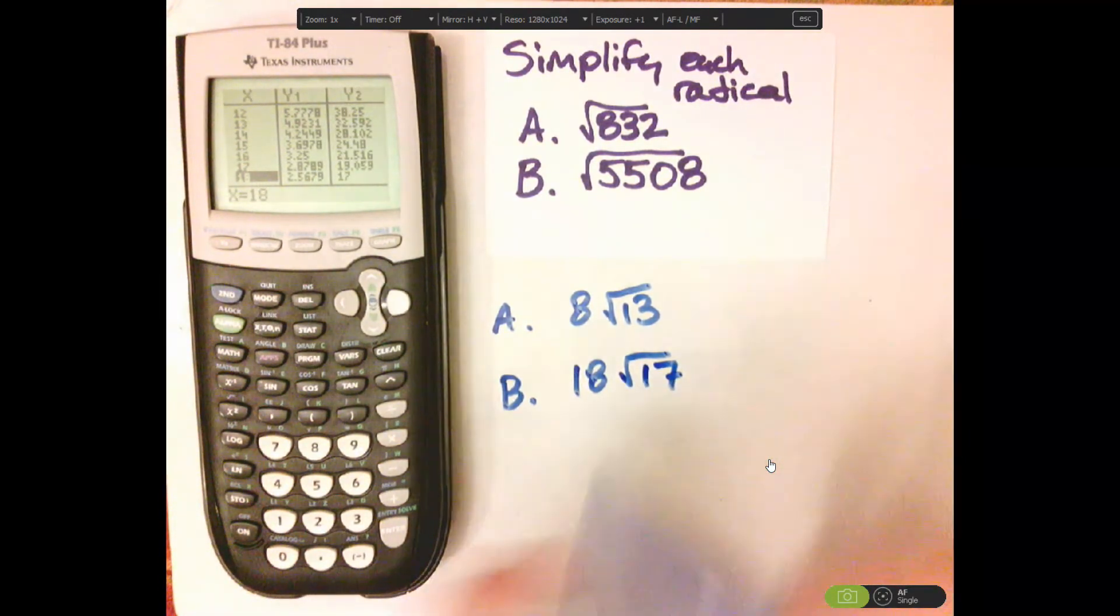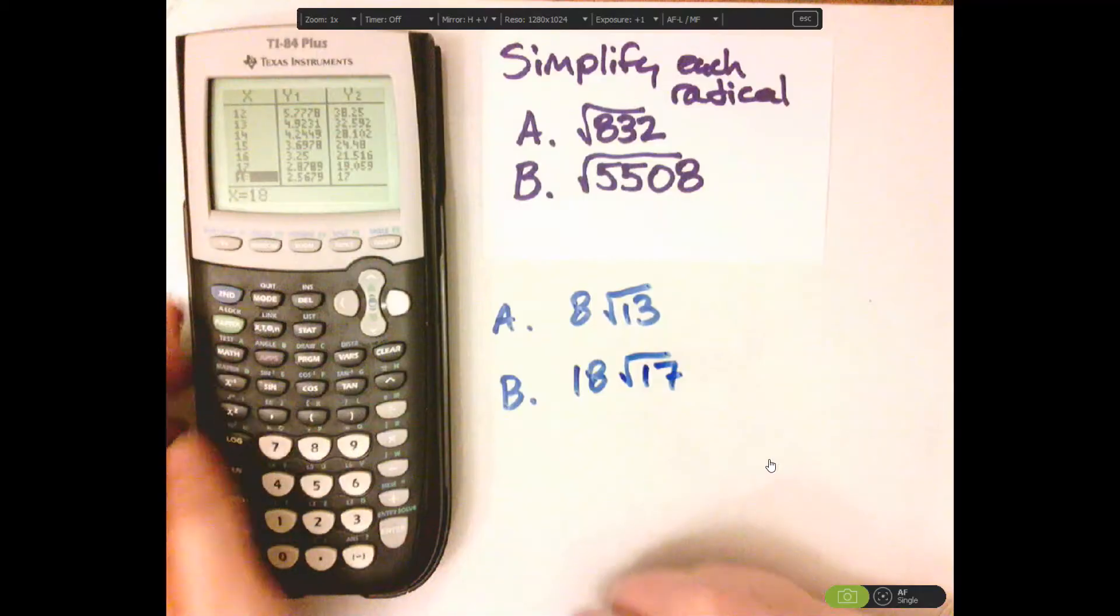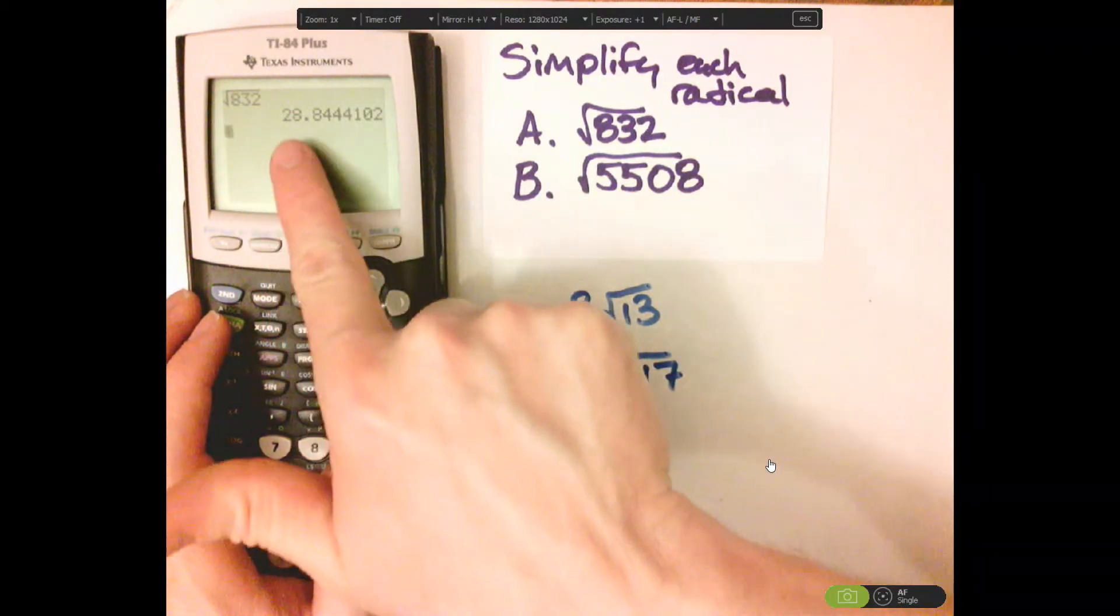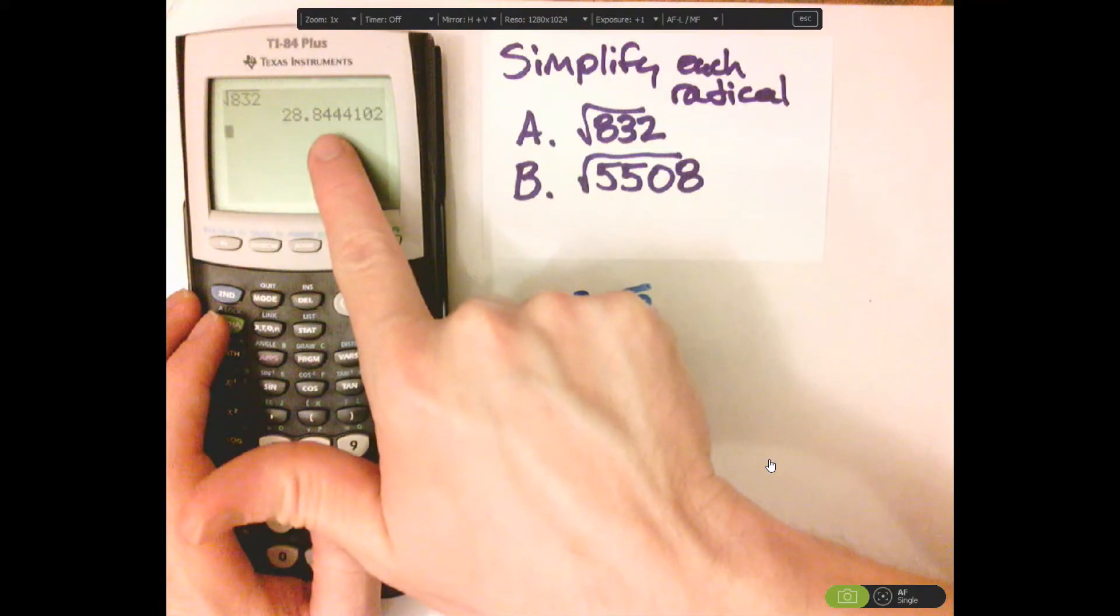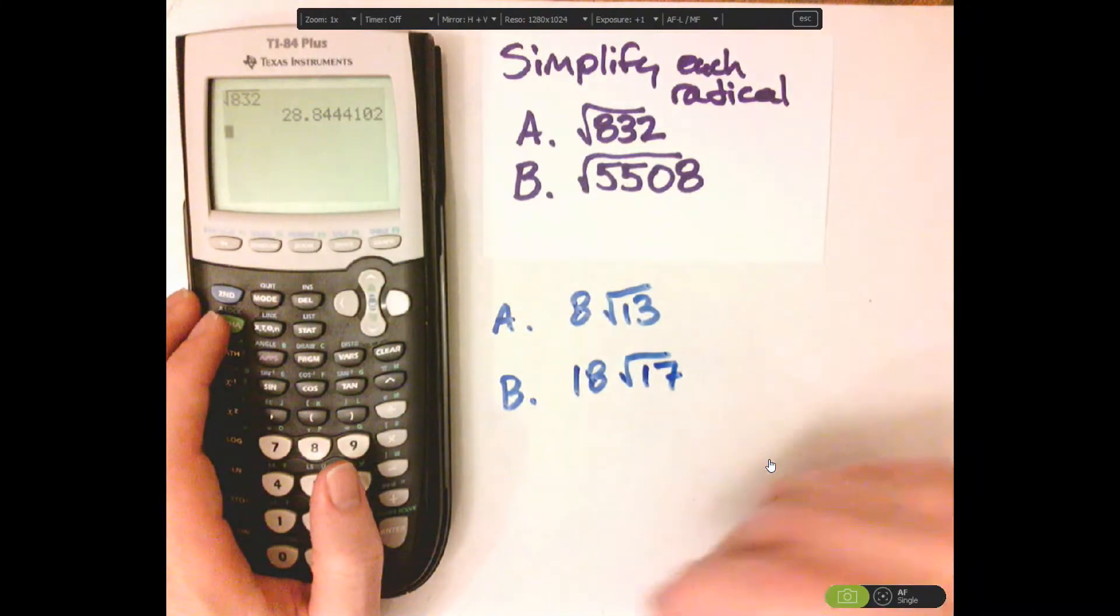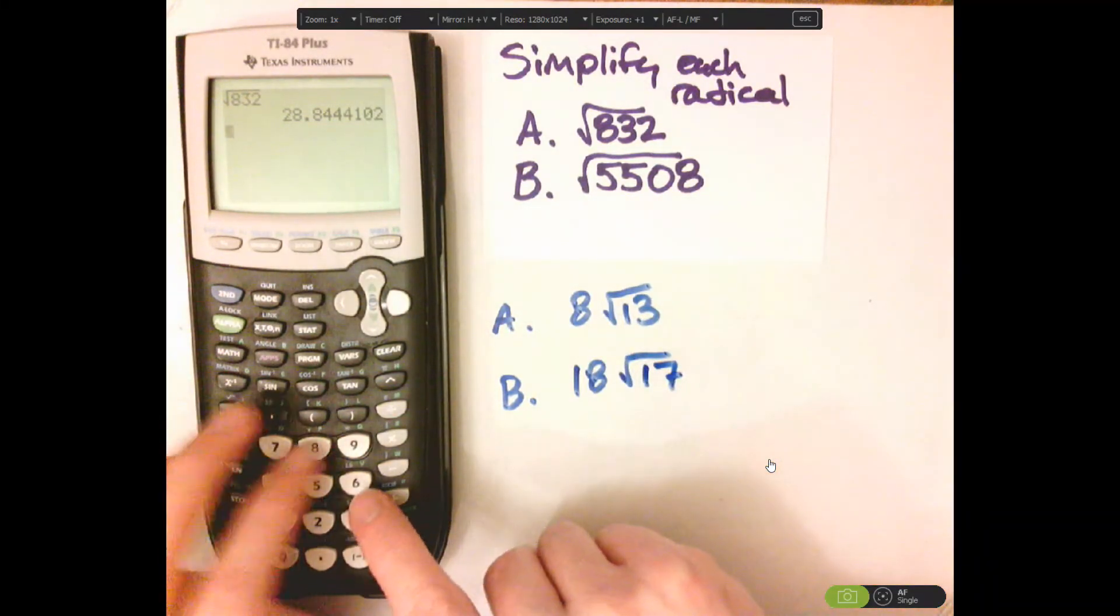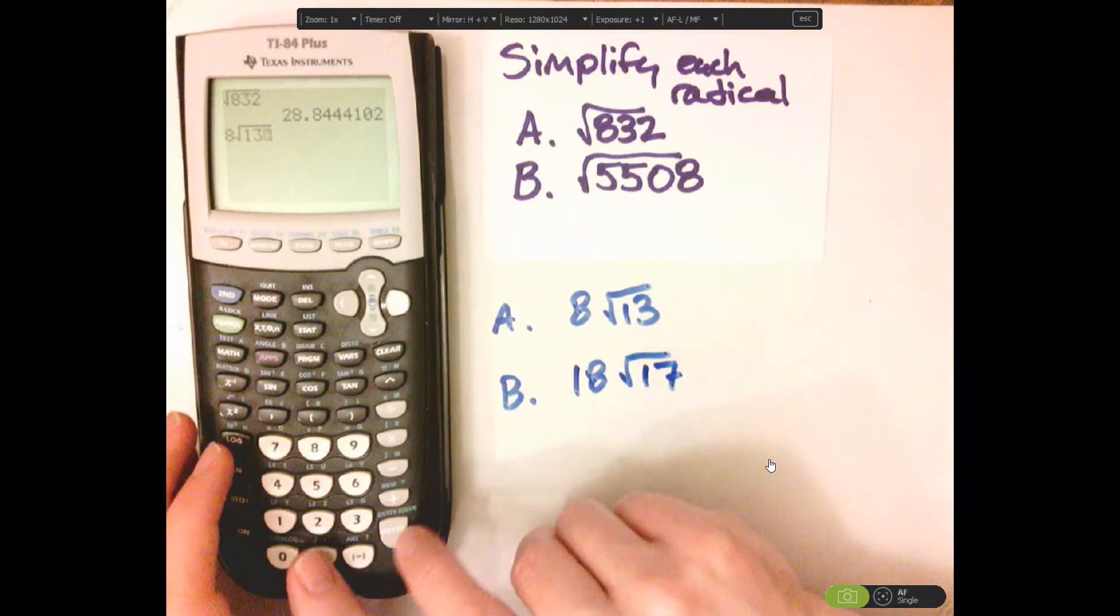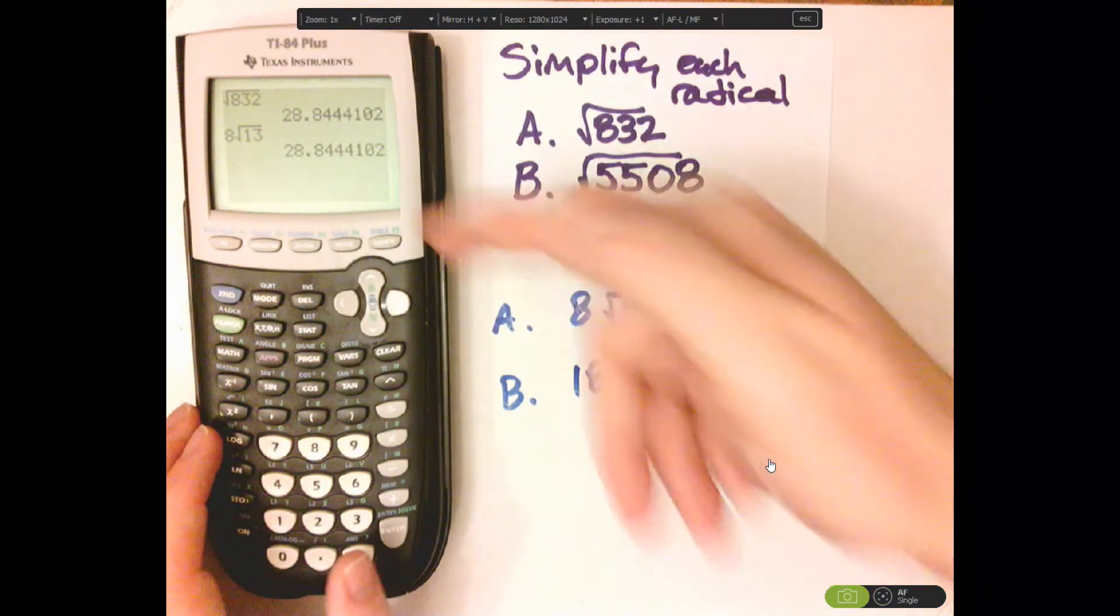We can actually check this. So second quit. See how I got for that first one 28.8 for whatever. I can type that in: 8 square root of 13. The decimal should be the same. It is.